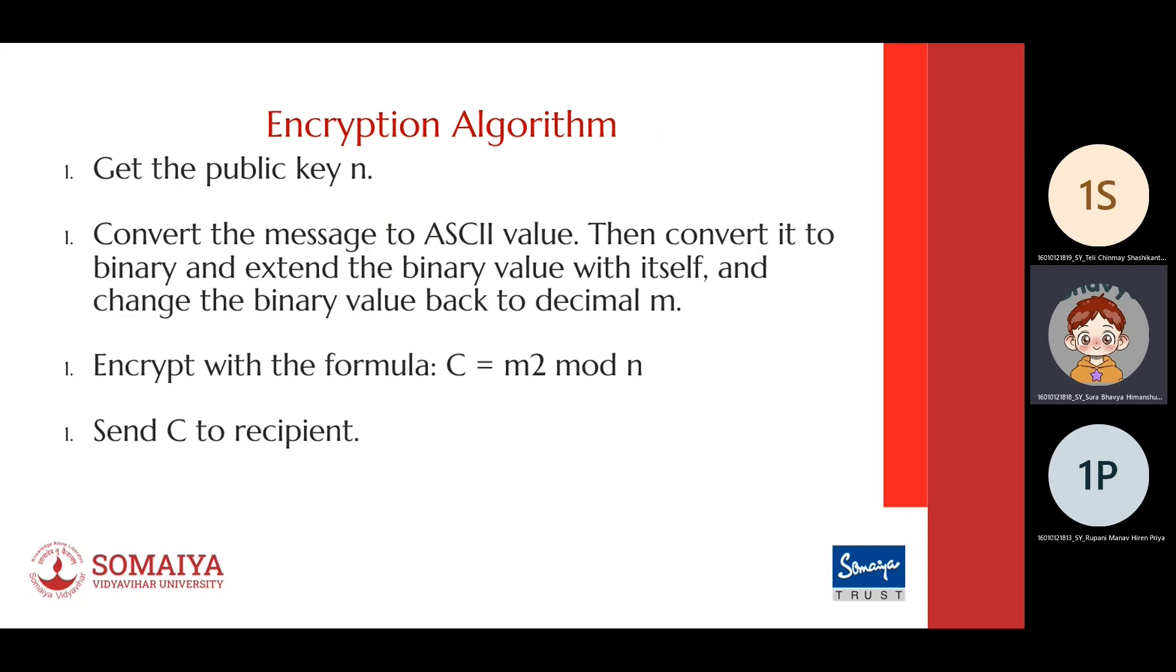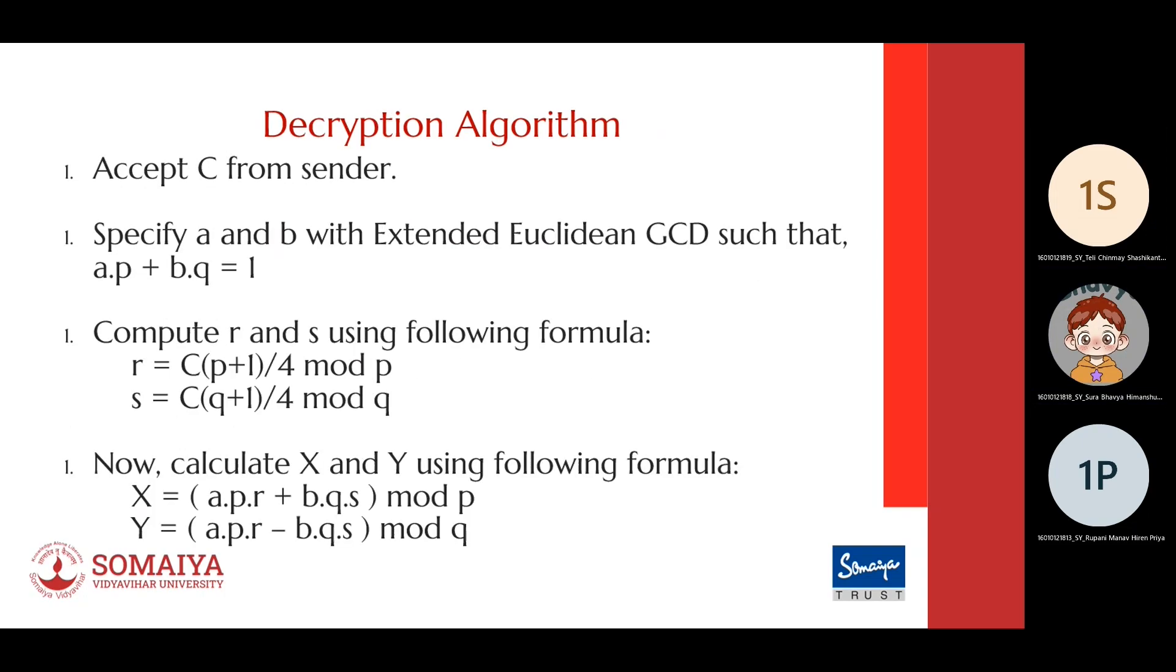Next is the decryption algorithm. The recipient accepts the encrypted message c from the sender. Then they must specify two numbers a and b with Extended Euclidean GCD such that a·p + b·q = 1.